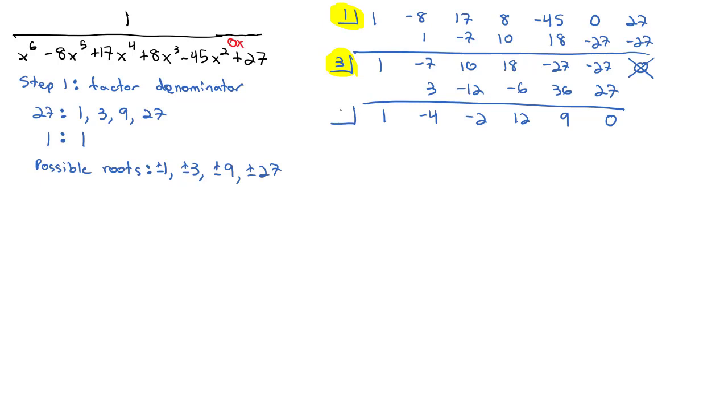We might suspect that 3 is a double root, so we'll try 3 again. Bring down the 1, times 3 is 3, gives us negative 1, times 3 is negative 3, plus negative 2 is negative 5, times 3 is negative 15, gives us negative 3, times 3 is negative 9, which gives us a 0, and so we do have a double root of 3.